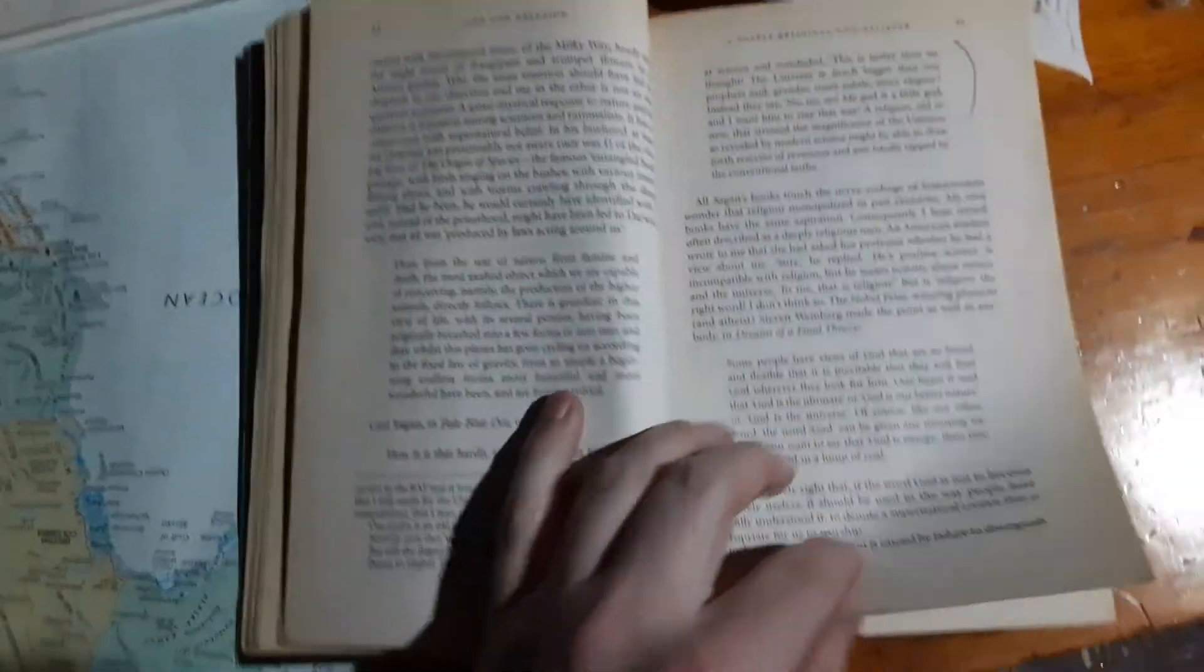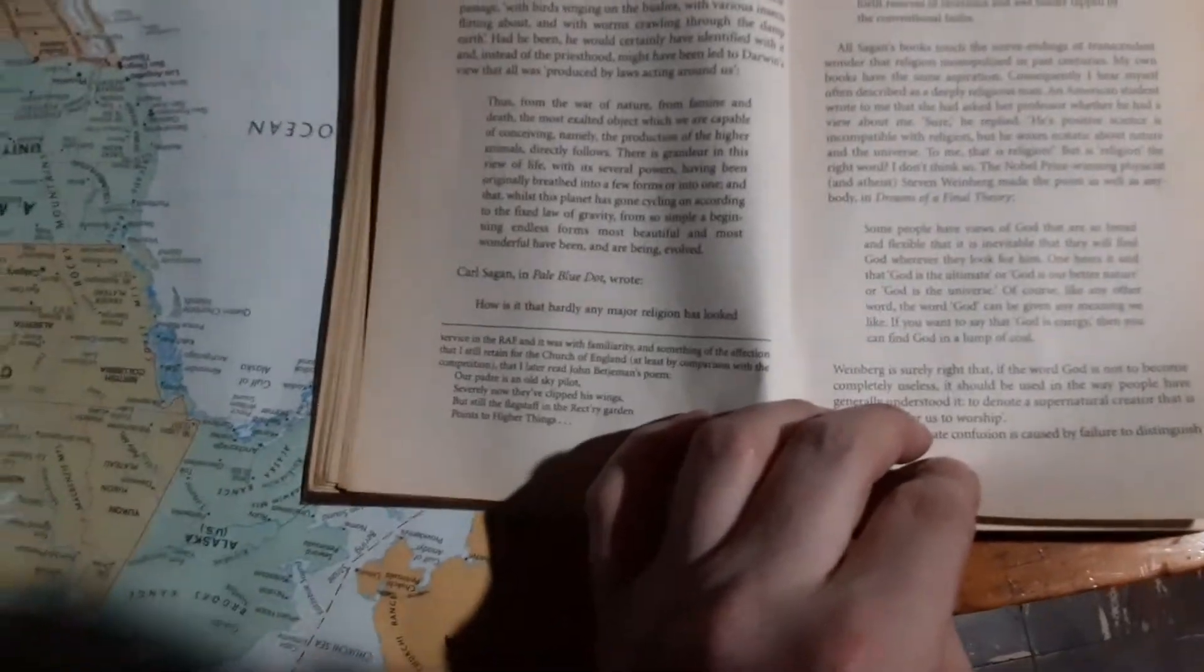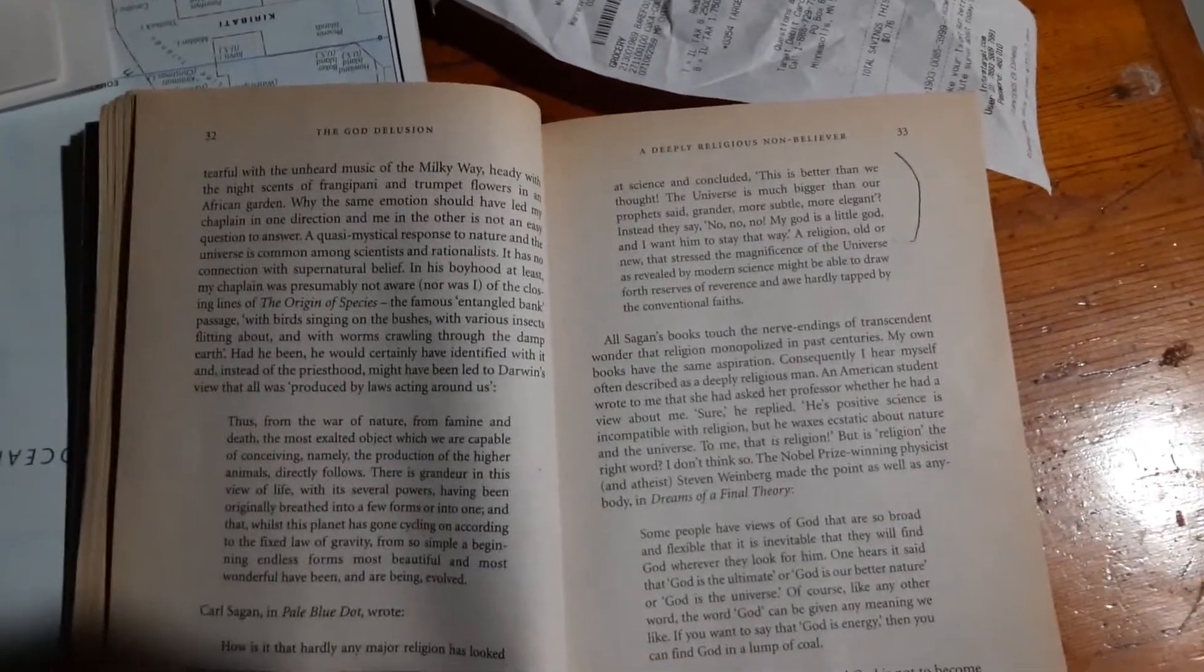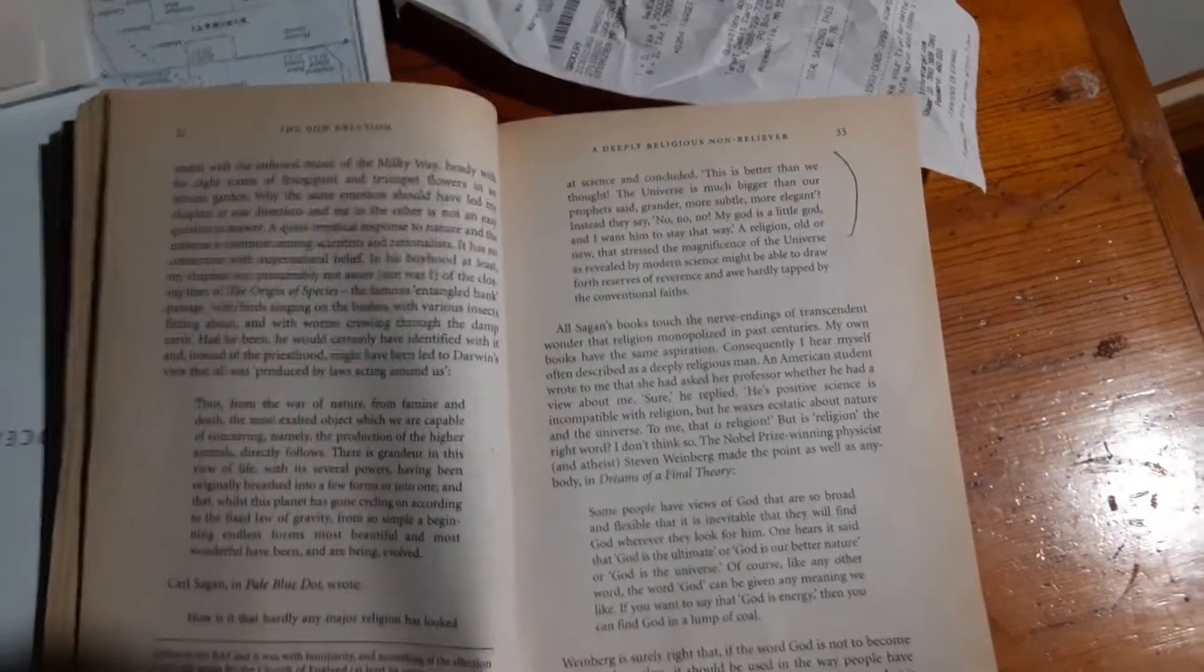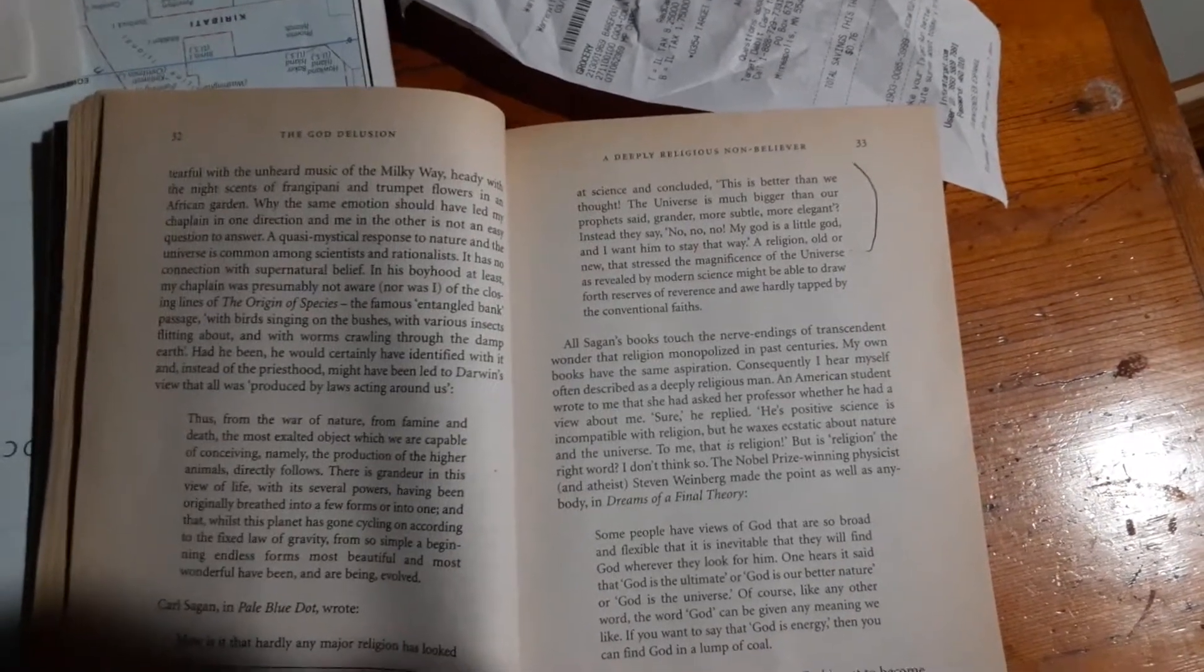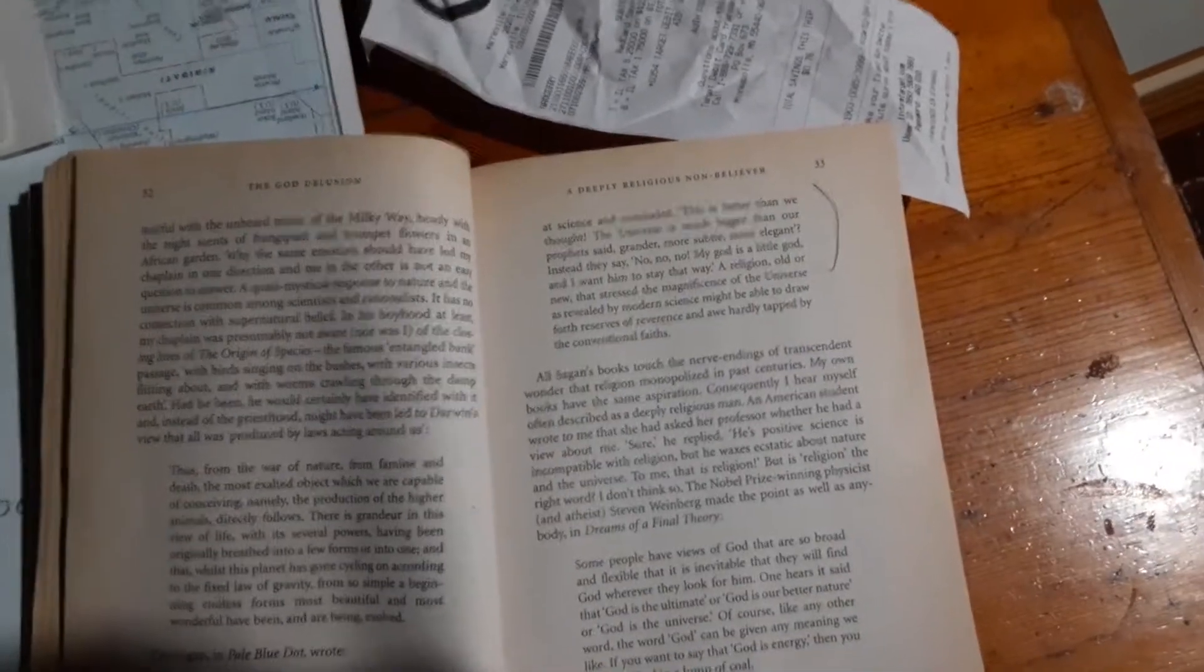Carl Sagan: How is it hardly any major religion has looked at science and concluded this is better than we thought? The universe is much bigger than our prophet said, grander, more subtle, more elegant. Instead, they say no, no, no. My God is a little God, and I want him to stay that way.